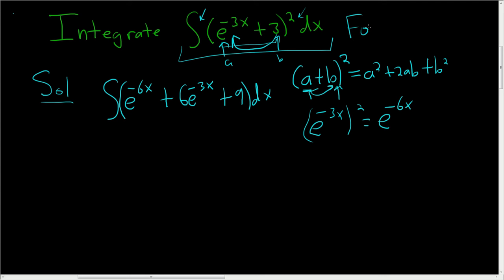You could use FOIL if you prefer. I just like to take advantage of this formula whenever possible. Let's go ahead and break it up. So this is going to be e to the negative 6x dx plus 6. I'll pull the constant out. e to the negative 3x dx plus, I guess I'll leave this constant in, 9 dx.